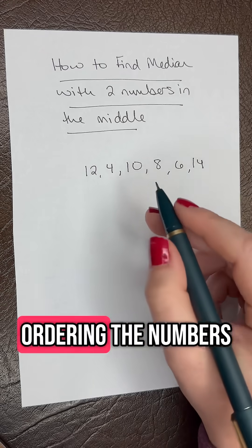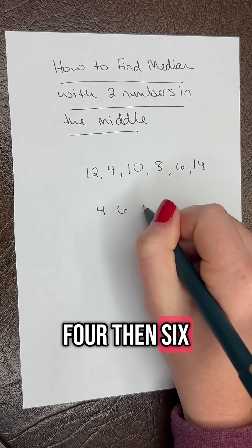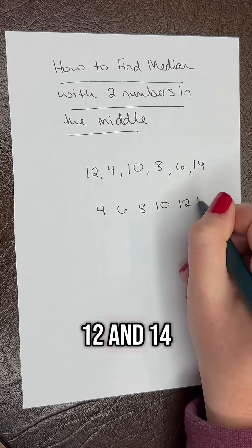Let's start by ordering the numbers from least to greatest. So we have 4, then 6, then 8, 10, 12, and 14.